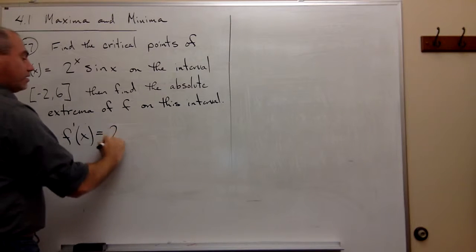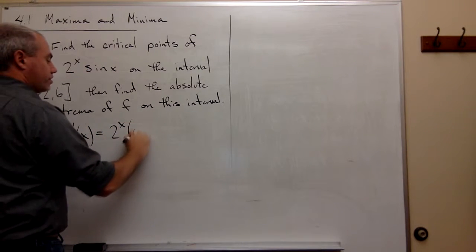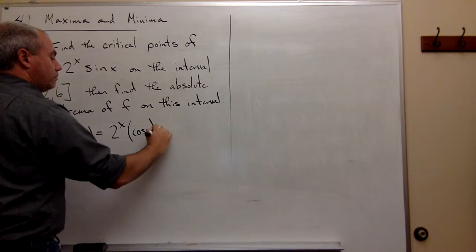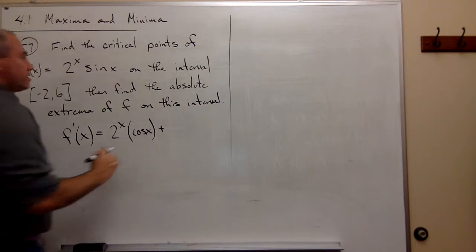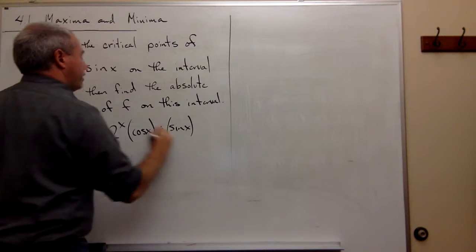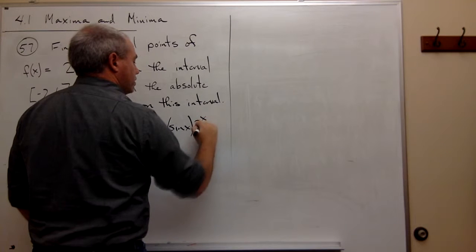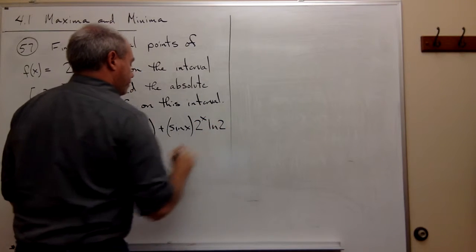So it's the first guy, 2 to the x, times the derivative of sine of x, which is cosine of x, plus the second guy, sine of x, times the derivative of the first guy, which is 2 to the x, times ln of 2.